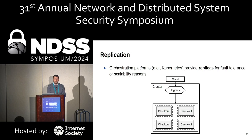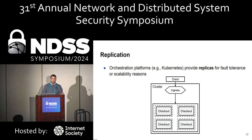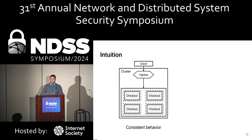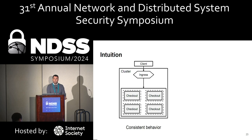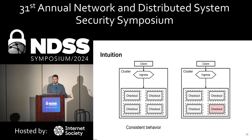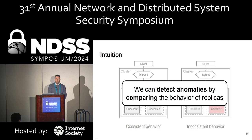The second property is the replication feature provided by orchestration platforms. Kubernetes, Docker Swarm, and other platforms provide replicas for fault tolerance or scalability. So instead of having just one workload, you can have any number of workloads to serve traffic. Combining these two principles gives us the core intuition: given that microservices are narrow in scope and replicated, replicas should behave nearly identically. Under normal settings, they show consistent behavior. Under attack, when one replica is compromised, they show inconsistent behavior. So we can detect anomalies by comparing the behavior of replicas.